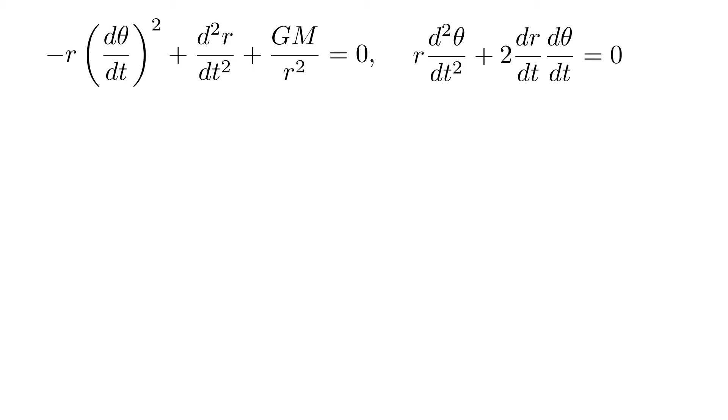So now we have two equations for us to solve. We want the final expression relating theta and r without t. Let's deal with the second equation first. We can multiply by r on both sides to get this equation.